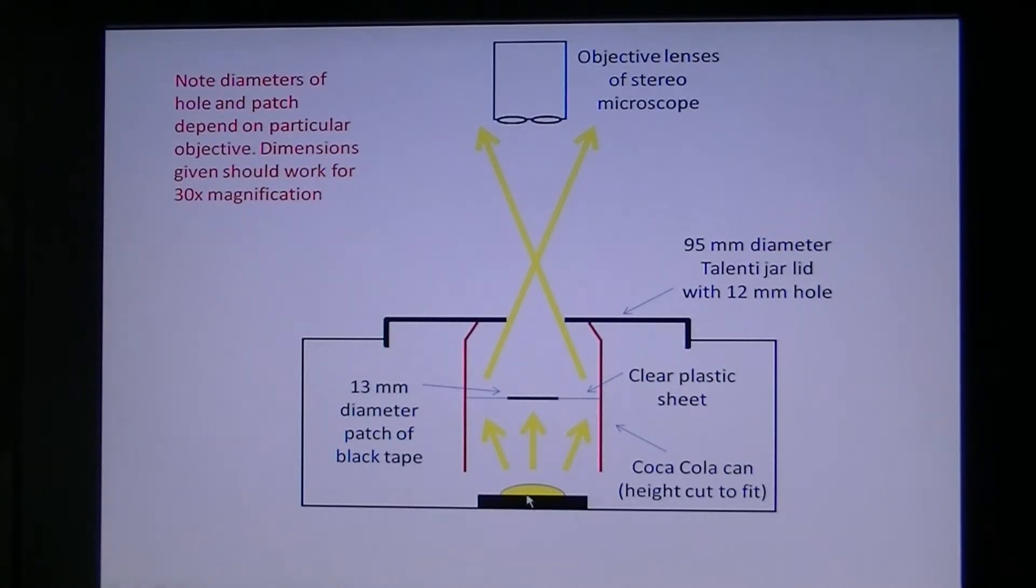The principle is that the direct light from the lamp is blocked, but the light that comes from the side reflects off the side walls of the Coke can and goes into the sample. That background light misses the objectives, so the objective sees just a black background unless there's something in this region to scatter the light.